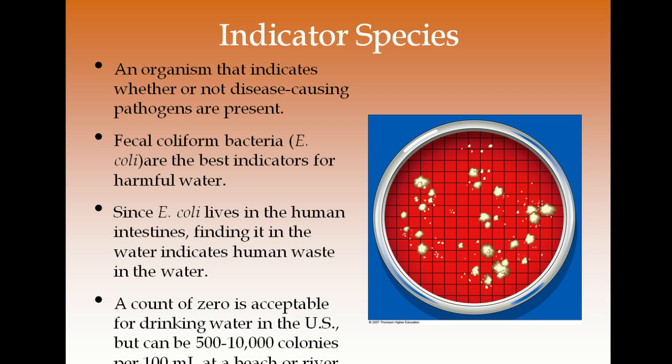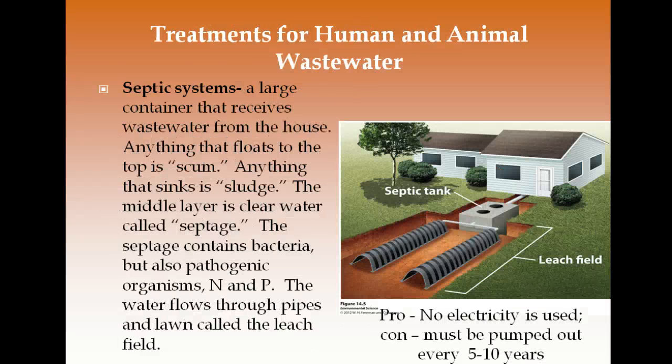To check if a body of water has disease-causing pathogens, scientists look for fecal coliform bacteria such as E. coli, because E. coli lives in our intestines. If E. coli shows up in a water quality test, we know human or animal waste is in the water. A count of zero coliform bacteria is acceptable for drinking water, but levels can be higher at a beach or river — meaning you could technically swim in it but wouldn't want to consume it. High E. coli levels have led governments to shut down bodies of water to swimming.